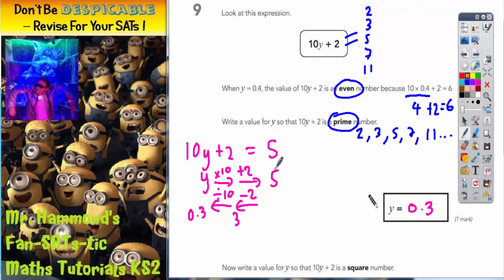However that's only because we chose 5. What happens if we'd have chosen 7? Well this time 10y plus 2 would have equaled 7. So if we started with y we times it by 10, then we added 2, and out popped 7.